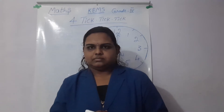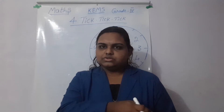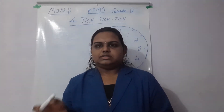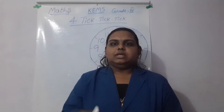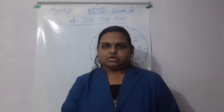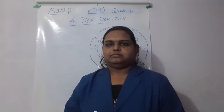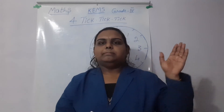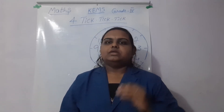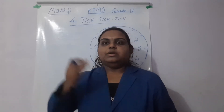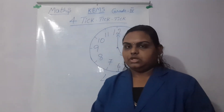What is a.m.? A.m. is nothing but midnight 12 o'clock to afternoon 12 o'clock — that represents a.m. If you are taking afternoon 12 o'clock to midnight 12 o'clock, that represents p.m. Midnight 12 o'clock to afternoon 12 o'clock is a.m.; afternoon 12 o'clock to midnight 12 o'clock is p.m. You have to know this.